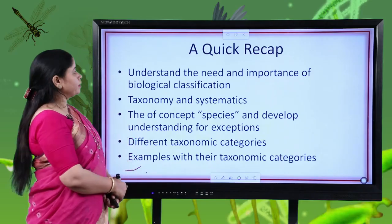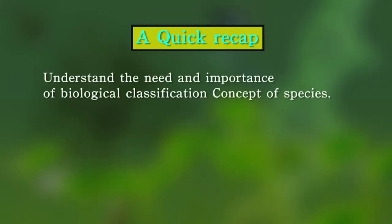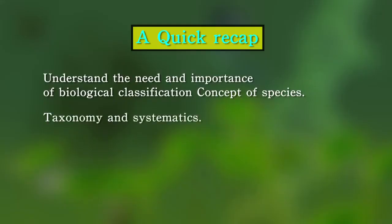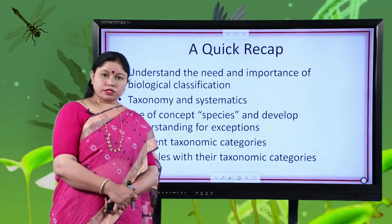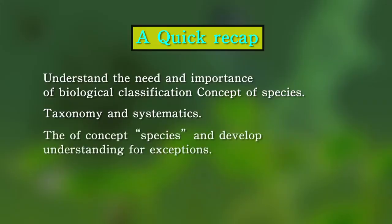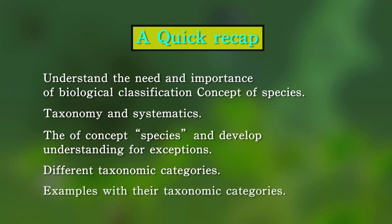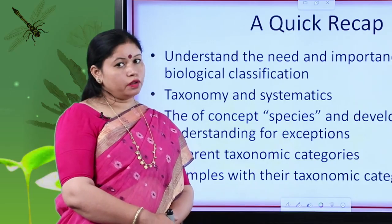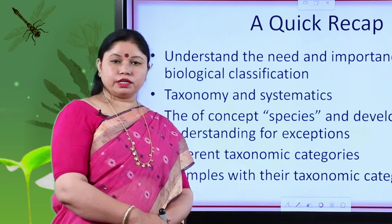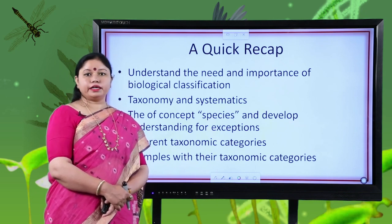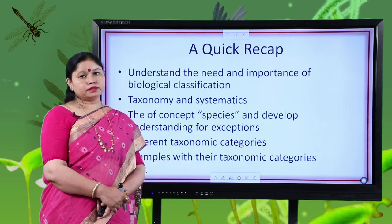Let us have a quick recap of the session. Today we discussed and understood the need and importance of biological classification. We explained the branches taxonomy and systematics. We tried to understand the species concept and its exceptions. We also learnt various taxonomic categories with the help of examples. That was all for today's session. In the next session, you will learn about various taxonomical aids and how they are used in the identification of various plants and animals. Thank you.